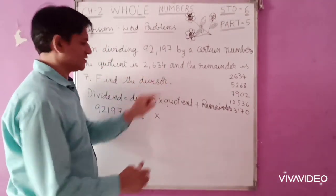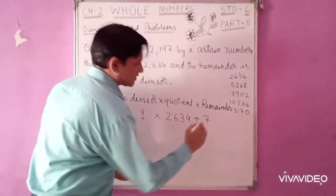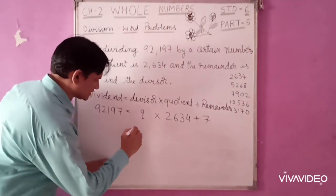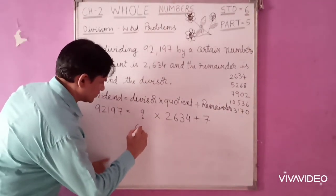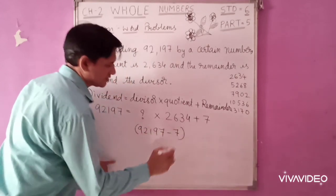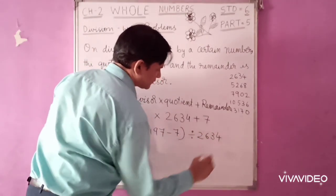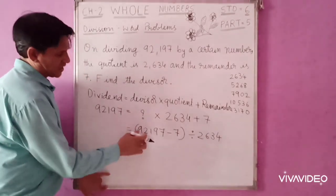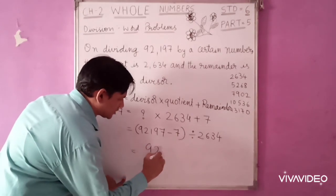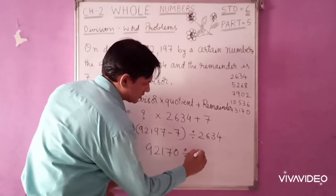Division algorithm: dividend equals divisor multiplied by quotient plus remainder. So: 92,197 equals divisor times 2634 plus 7. All these numbers, you will bring to this side. So: 92,197 minus 7, divided by 2634. That gives 92,170 divided by 2634.